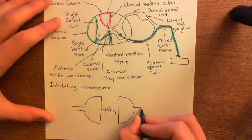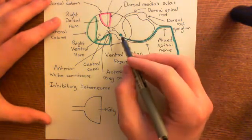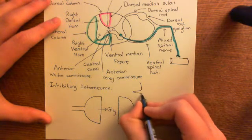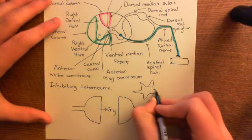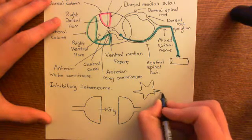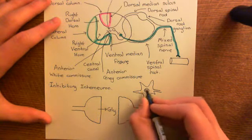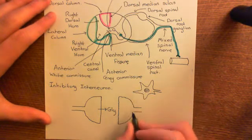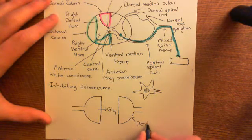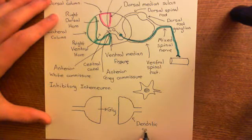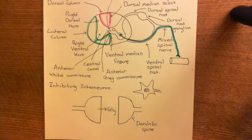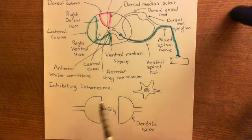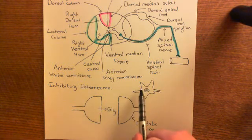The glycine will be acting on a dendritic spine on the dendrite of the alpha motor neuron. The alpha motor neuron has a cell body with a huge number of dendrites coming off it, and then its axon and cell nucleus. Off the dendrites come little processes known as dendritic spines, which interface with the axon terminals of other neurons and collect their input.